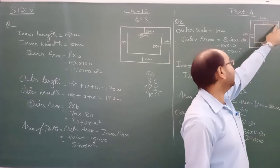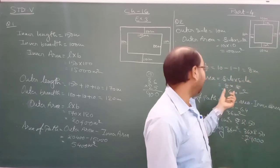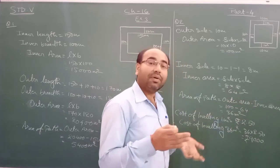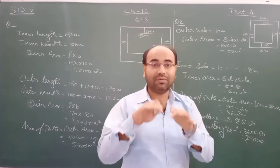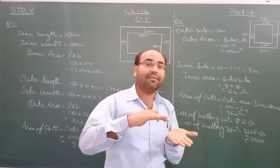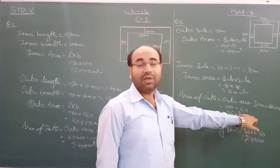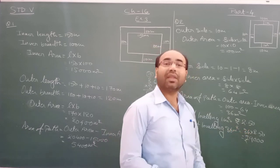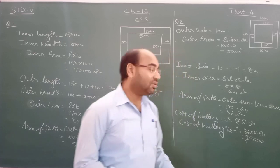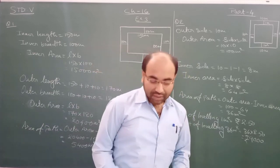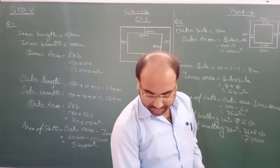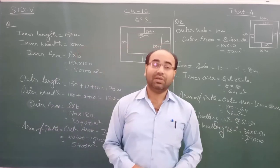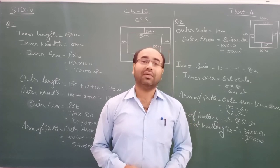So both sides separated by 1 meter each, that is where we got inner side as 8. Inner area is 64 meter square. Area of path equals outer minus inner, which is 36 meter square. We could then level it at the given rate. So the first 2 questions are already finished. In the next video we will move to another 2. Till then, thank you and take care.